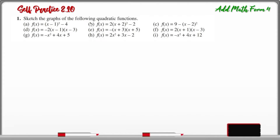Sketch the graph of the following quadratic functions. For questions A, B, and C, all of these quadratic functions are written in vertex form, which is f(x) = A(x - h)² + k.